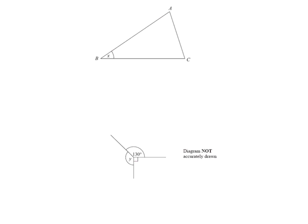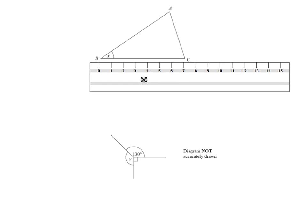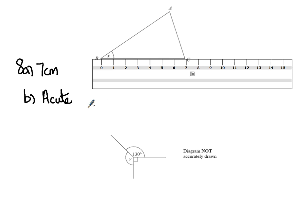Question 8 — we have a triangle. First, we want to measure the length, so I'll bring a ruler up to the line, make sure it starts at the beginning, and it will be exactly 7cm. So for 8a, it's 7cm. For 8b, write down a special name for the angle marked X — it's acute and tiny, less than 90, so it's an acute angle. Obtuse is between 90 and 180, and reflex is above 180 and less than 360.